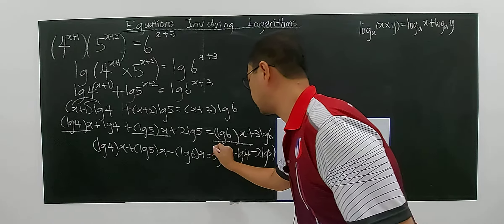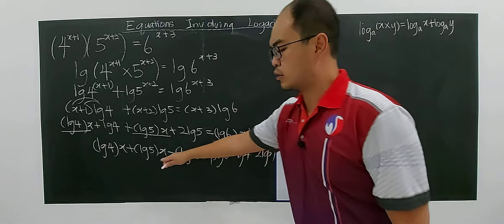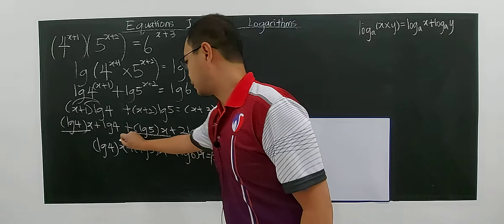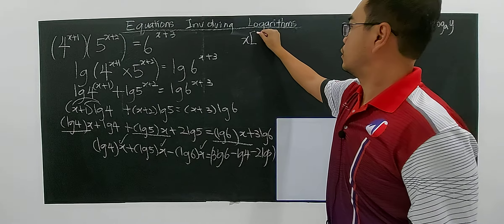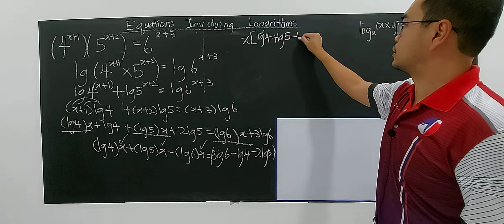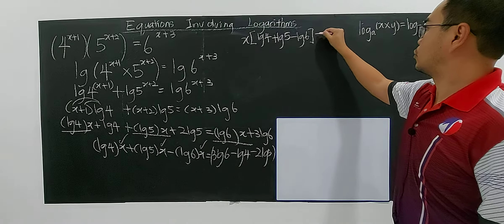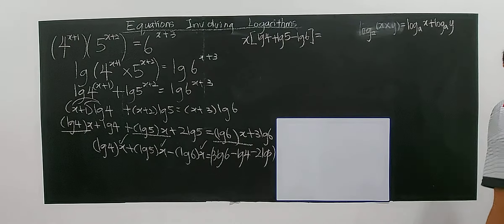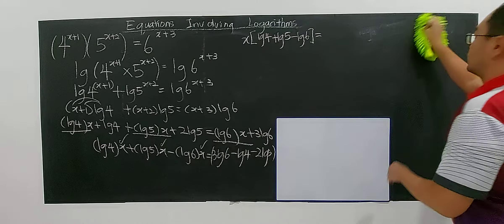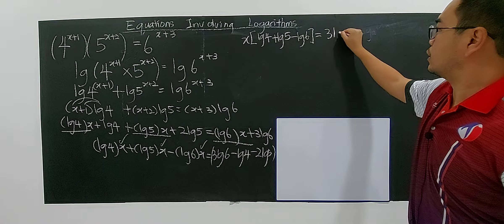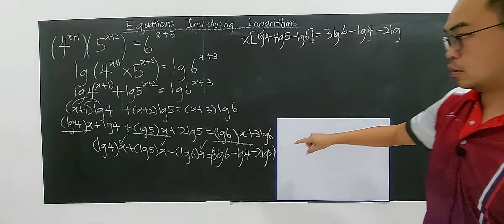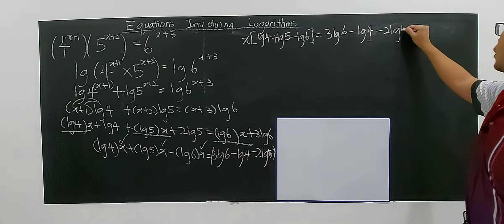Factorize x to make it the subject: x(log4 + log5 - log6) = 3log6 - log4 - 2log5. This is the product of x with all these numbers, so divide both sides by this coefficient, which gives you x equals 3log6 - log4 - 2log5 divided by log4 + log5 - log6.